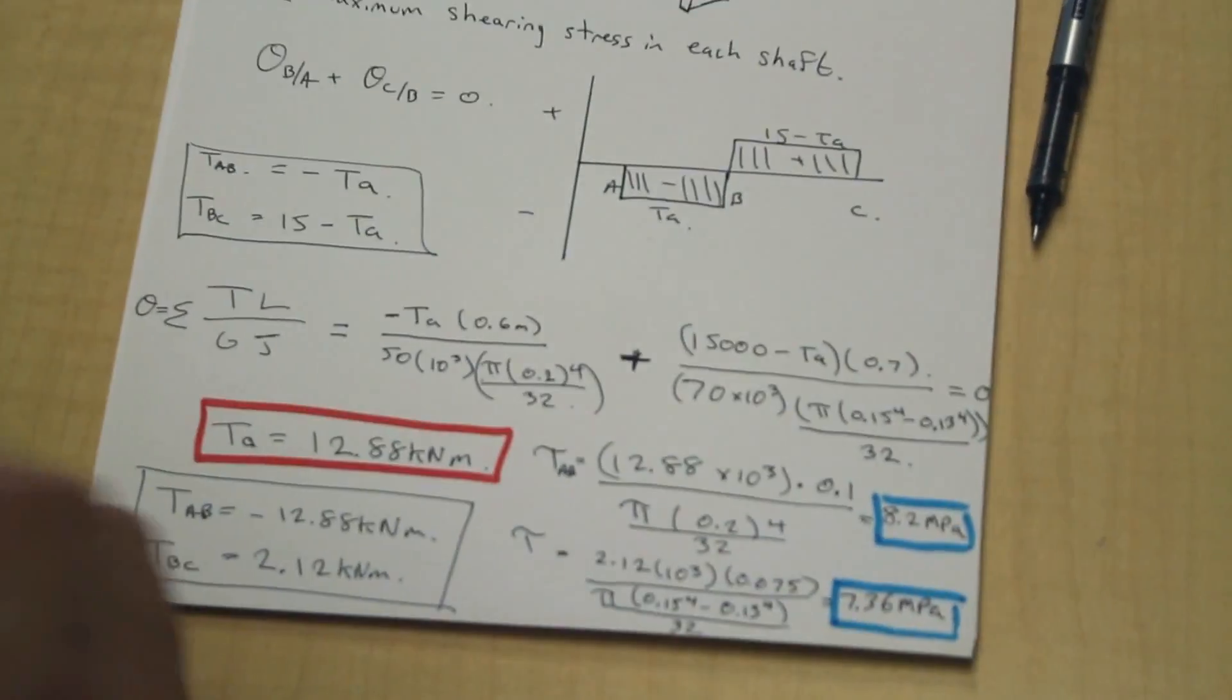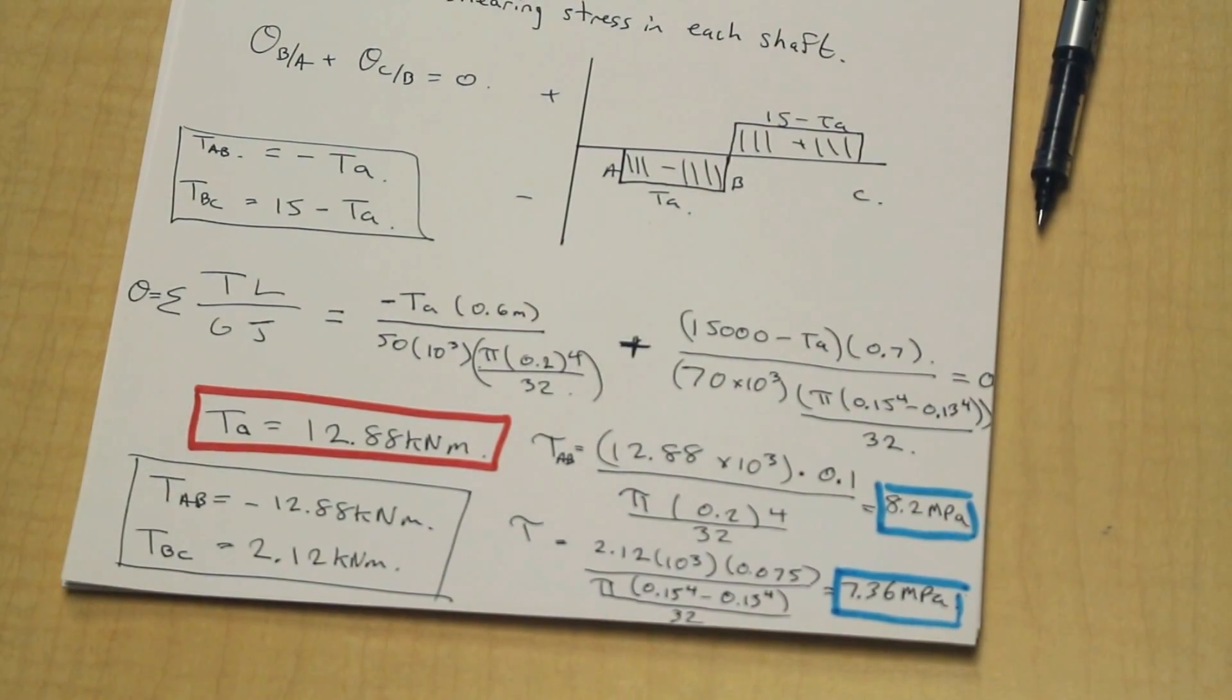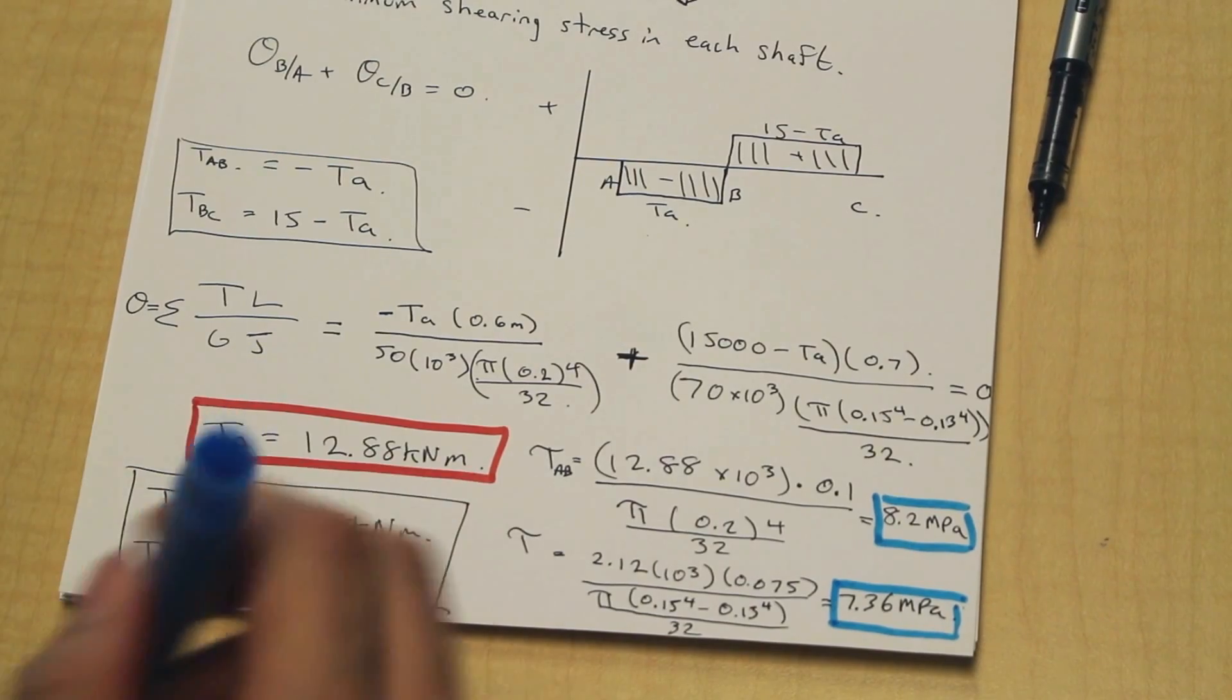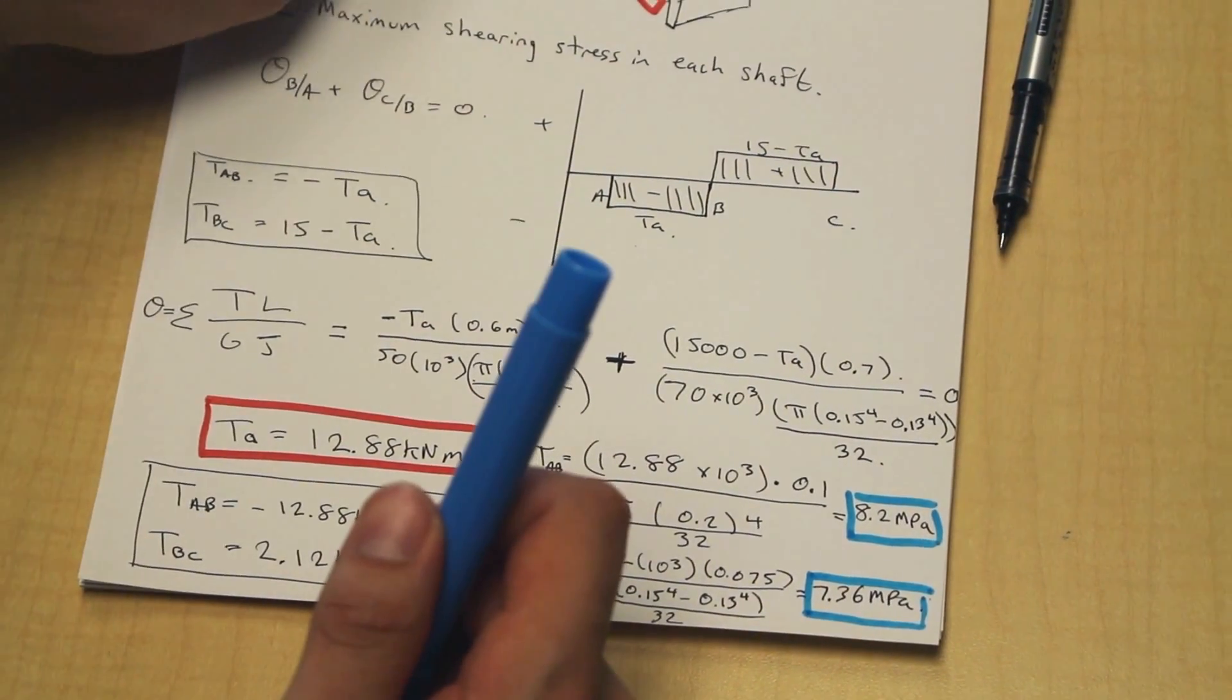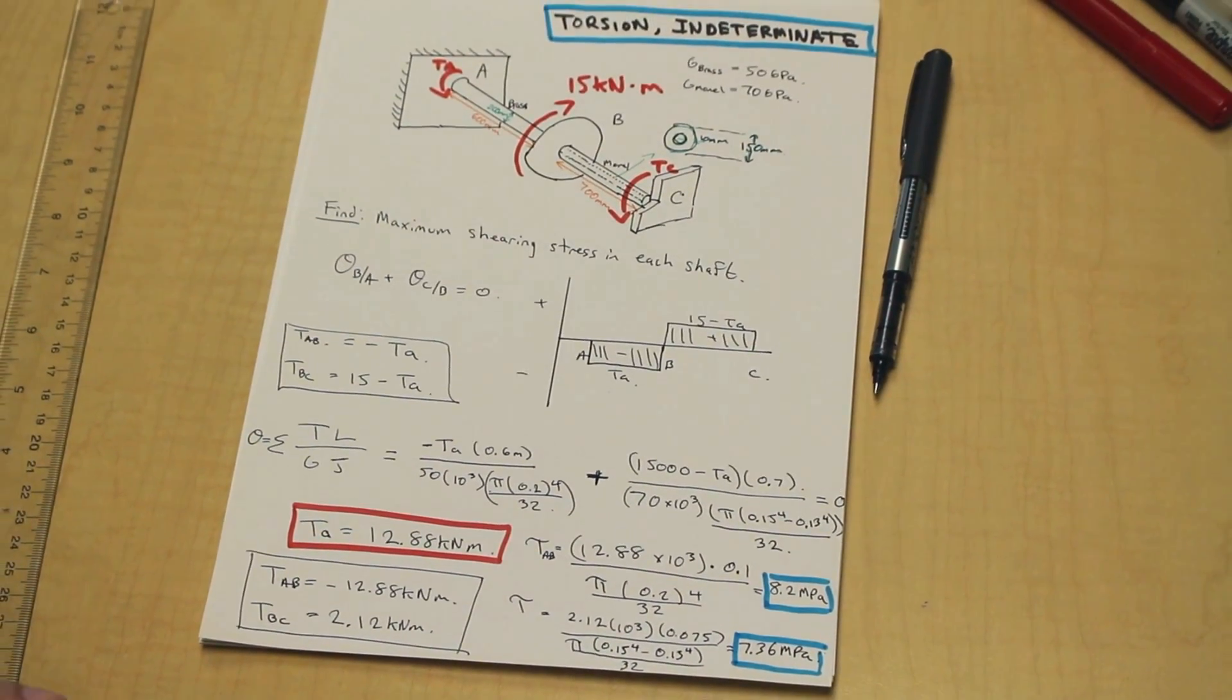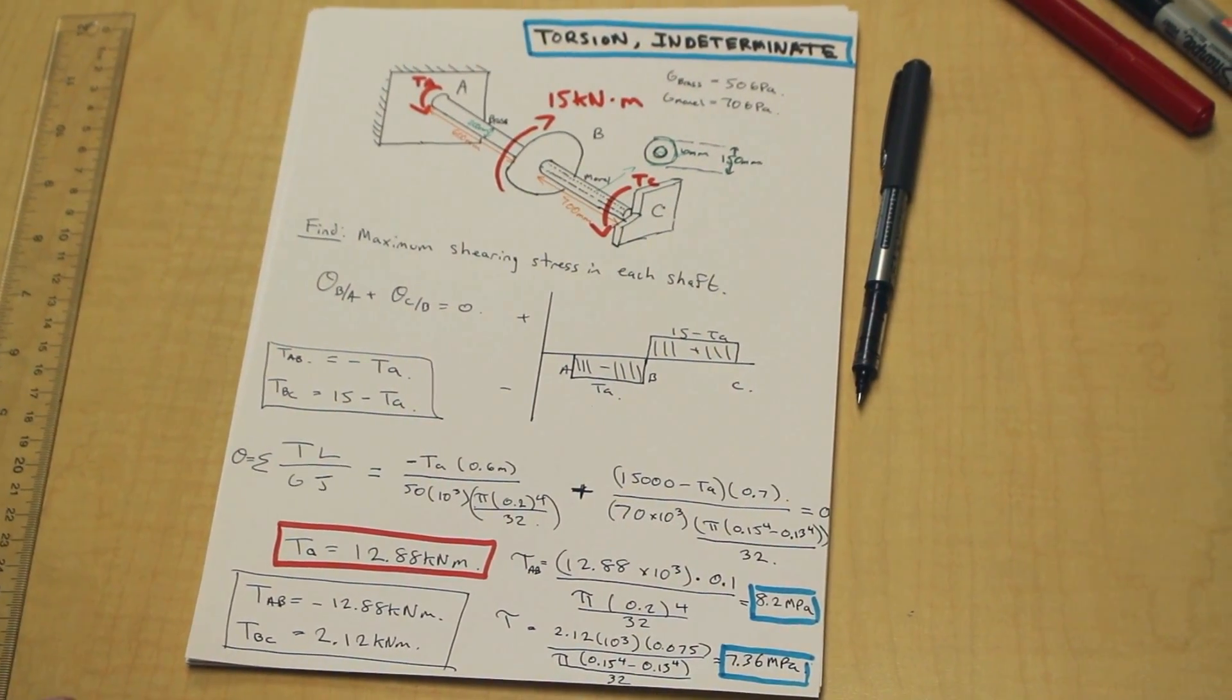So sorry for the small writing at the bottom, but I hope you guys can see that. And we've done what the question is asked. We've solved for the maximum shearing stress in the brass shaft and in the Monel shaft. And click on the next video. We're going to do a couple more problems on this sketch here. So thanks for watching.